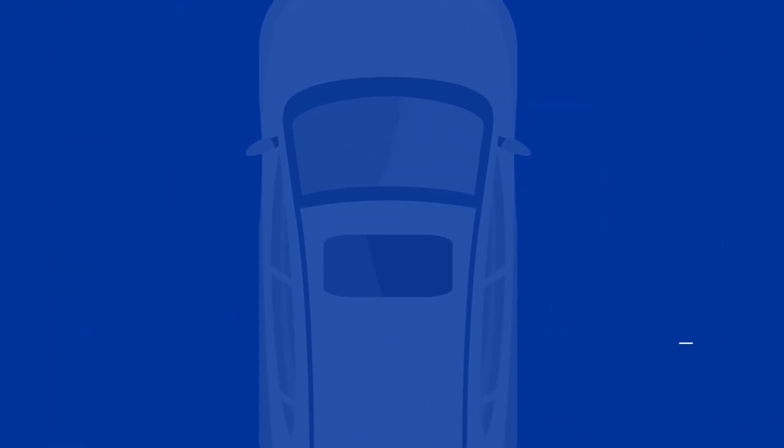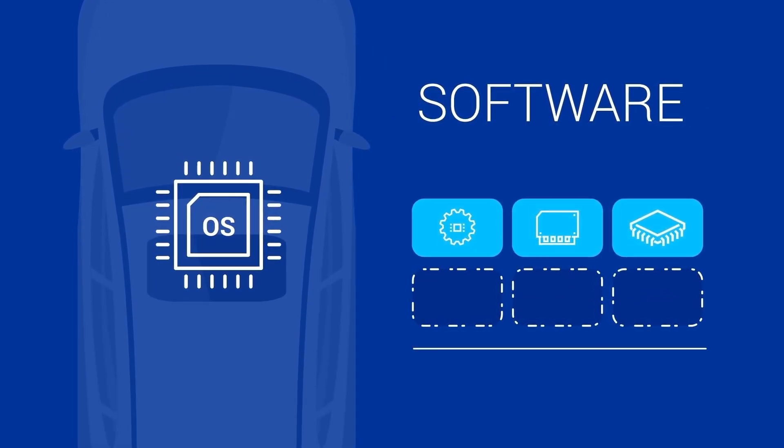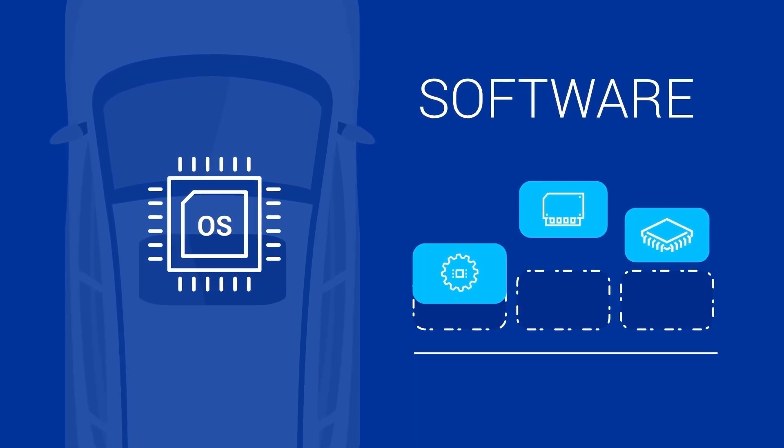The second layer is the vehicle's core software, an embedded real-time operating system. This foundational platform may include a system of modules that can be added or removed.